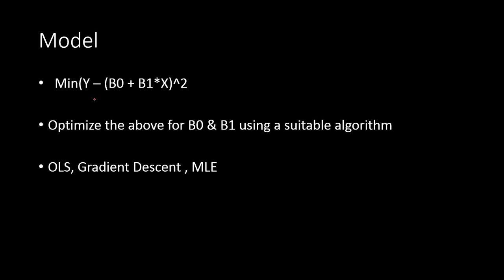We are trying to minimize cost functions where y is the target variable and x is the independent variable. We have parameters like beta naught, and we find out the values of these parameters by optimizing the cost function. The algorithms we can use include ordinary least squares, gradient descent, or maximum likelihood estimation.